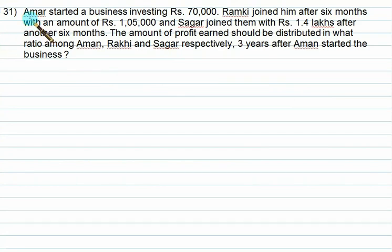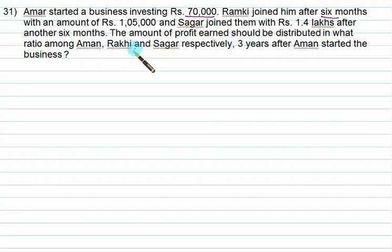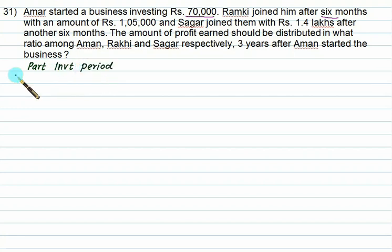Amar started a business investing 70,000. Ramke joined him after 6 months with 1,05,000, and Sagar joined them with 1,40,000 after another 6 months. The profit earned should be distributed in what ratio among Amar, Ramke, and Sagar respectively, 3 years after Amar started the business? Amar invested for 3 years, that is 36 months. We set up columns for partners, investment, and period. A represents Amar who invested 70,000 for 36 months.